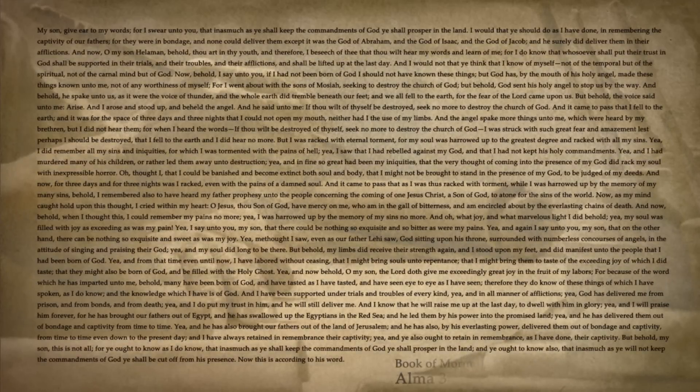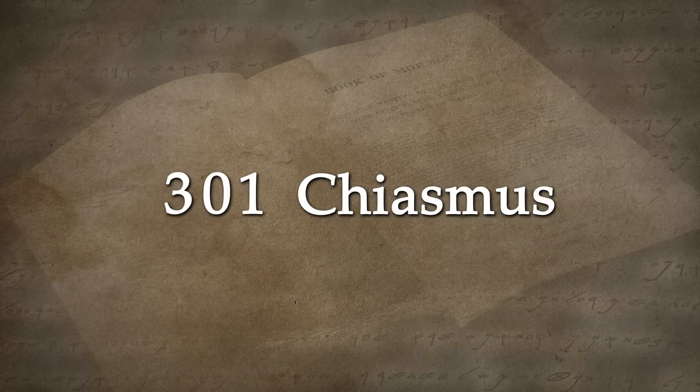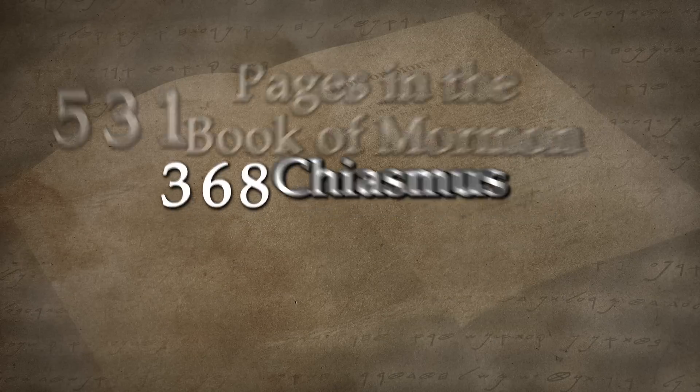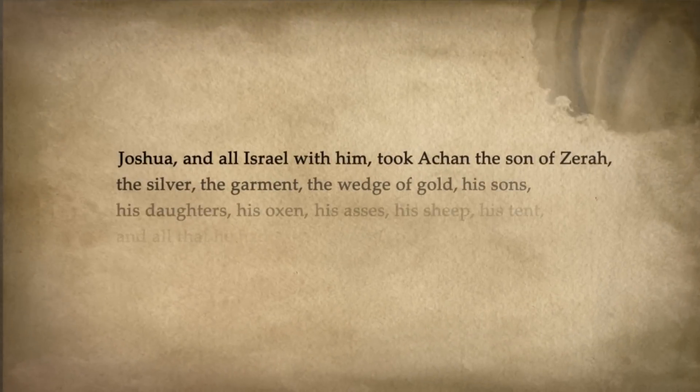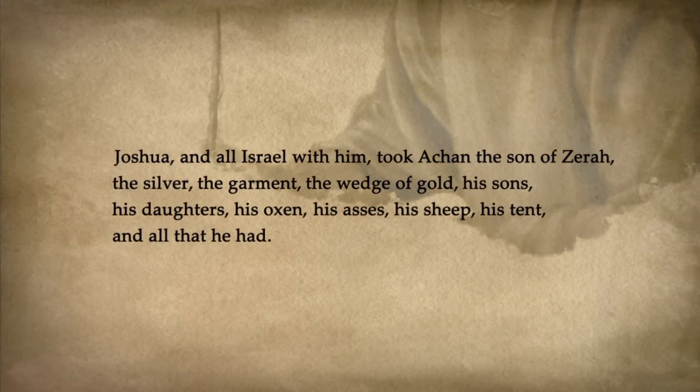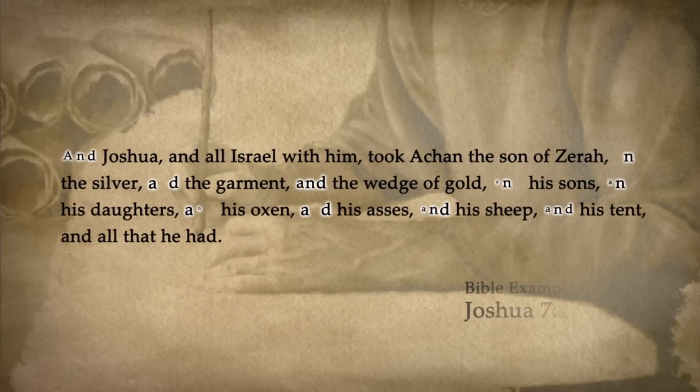Ironically, the very things that early critics found to be offensive to their modern literary tastes have, in many cases, turned out to be remarkable evidence of its Hebrew origins. The Book of Mormon indicates that the ancient prophets who wrote it tried to preserve the literary traditions and learning of their Hebrew ancestors. The early Hebrew language didn't have punctuation or paragraph breaks. Instead, Hebrew writers used various types of repetition to group, separate, compare, or contrast ideas. Scholars refer to these repetitions as parallelisms, and the Book of Mormon is chock full of them.